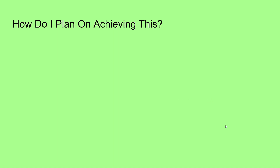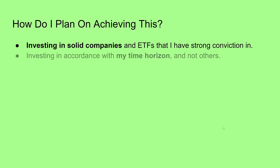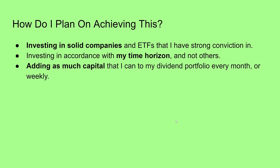So how do I plan on achieving this? First, by investing in solid companies and ETFs that I have strong conviction in, and investing in accordance with my own time horizon — not others'. A 20-year-old watching a 40-year-old YouTuber with a 10-year horizon shouldn't blindly follow that strategy. Next, adding as much capital as possible to my dividend portfolio every month or week. I'm not working a traditional nine-to-five right now — I have different ventures — so I make different amounts each month, but whatever I can spare goes into the portfolio.